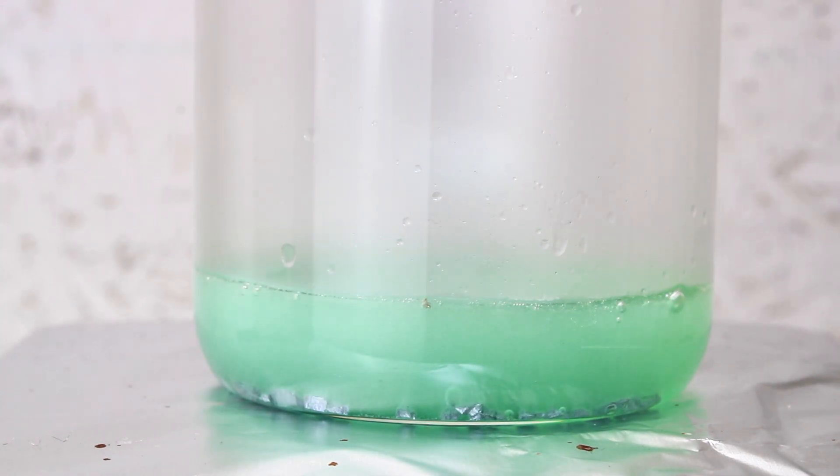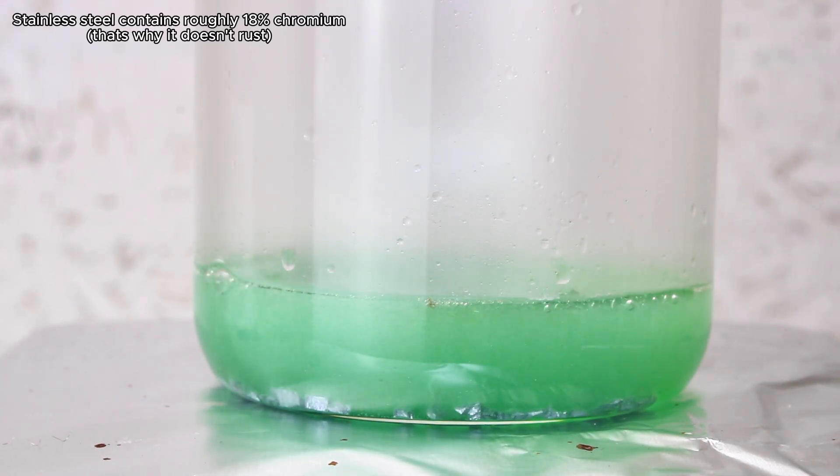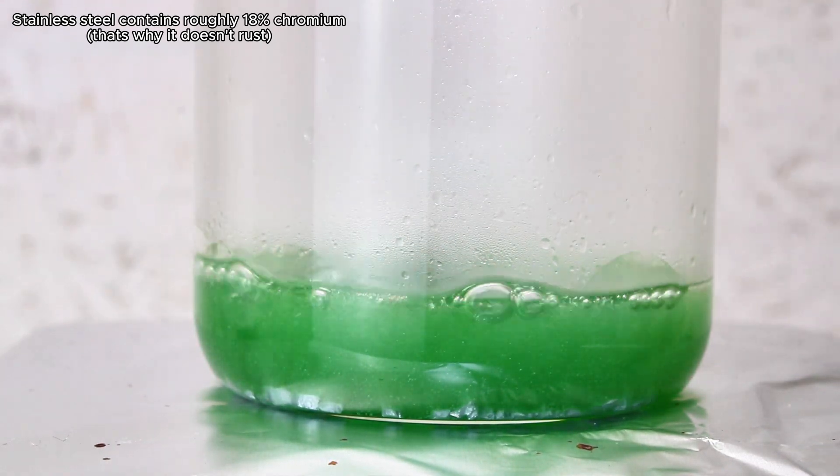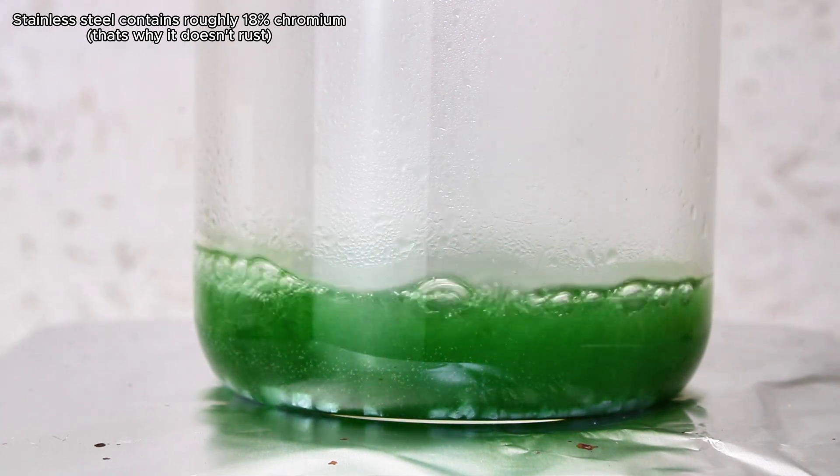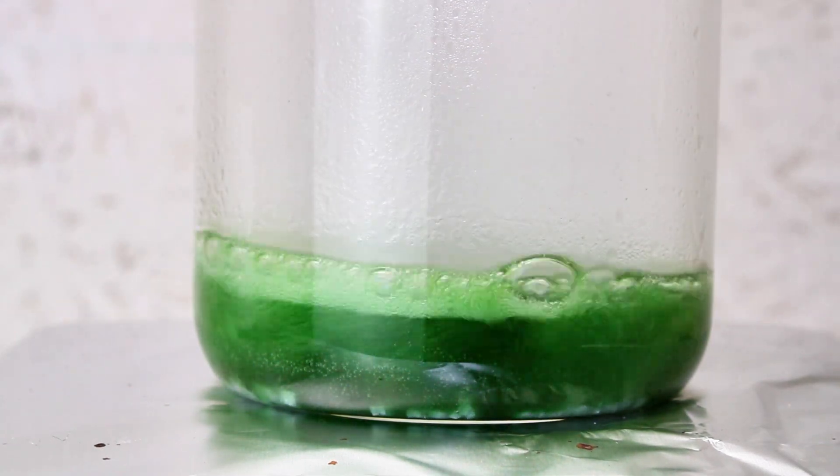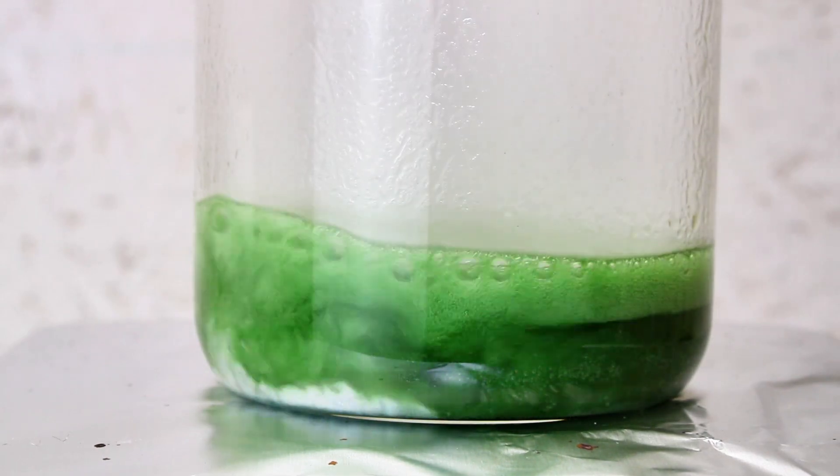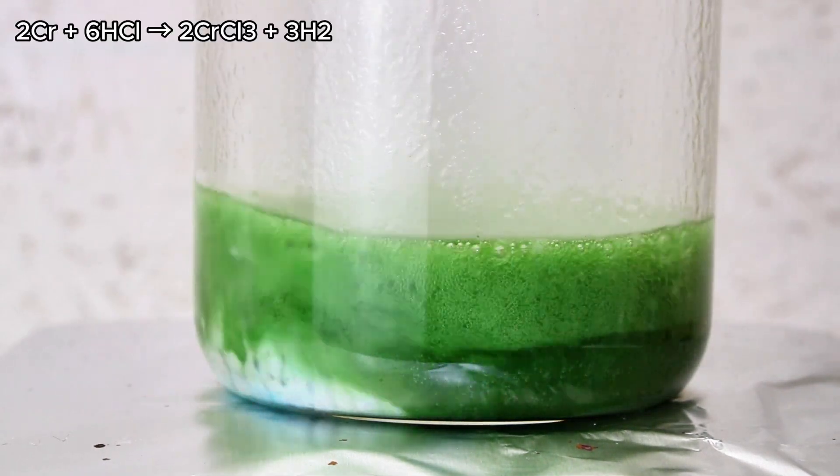The first thing that comes to mind would be like dissolving down some silverware in hydrochloric acid and then selectively precipitating the chromium, which I might do in a future video. In any case, chromium metal dissolves extremely readily in hydrochloric acid into the very dark green hydrated chromium 3 chloride.